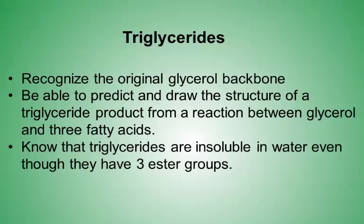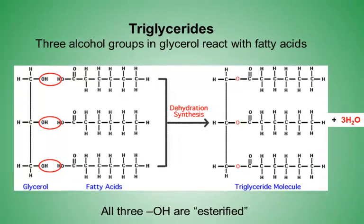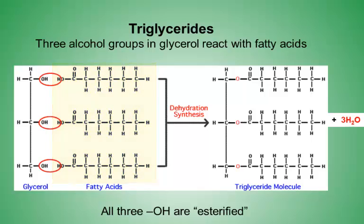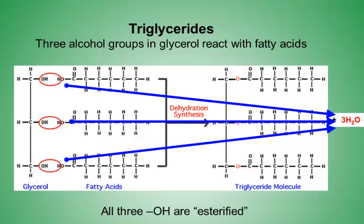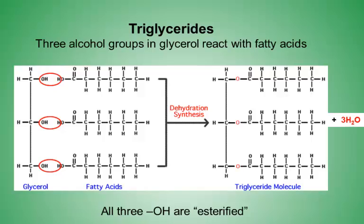Know that triglycerides are fats and they are insoluble in water, even though they have three ester groups. Triglycerides are formed by the reaction between glycerol — the molecule on the far left, which contains three alcohol groups — and three fatty acids. The red ovals to the left show where the two molecules join to form the ester bond. As a result of the reaction, one water molecule is produced for each fatty acid that reacts with the glycerol. The hydroxyl groups on the glycerol are said to be esterified because of the new ester group formed in the triglyceride molecule.